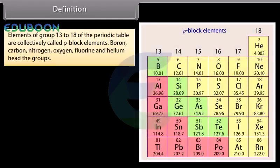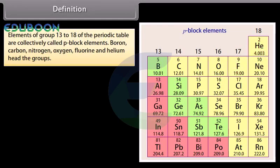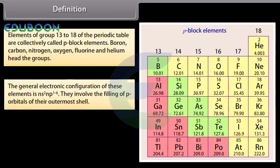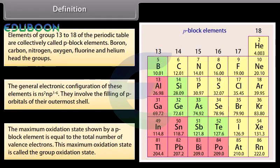Elements of groups 13 to 18 of the periodic table are collectively called P-block elements. Boron, carbon, nitrogen, oxygen, fluorine and helium head the groups. The general electronic configuration of these elements is NS2, NP 1 to 6. They involve the filling of P-orbitals of their outermost shell. The maximum oxidation state shown by a P-block element is equal to the total number of valence electrons, and this is called the group oxidation state.